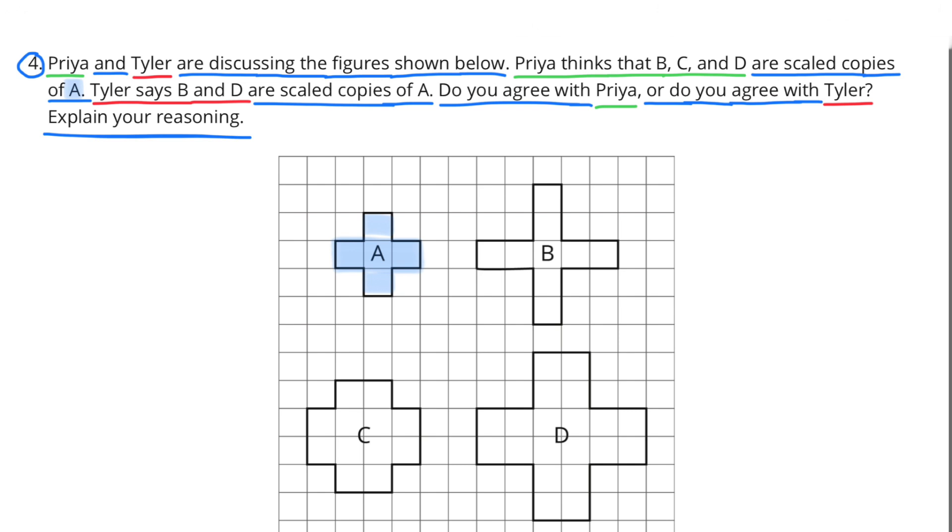Tyler says B and D are scaled copies of A. Do you agree with Priya or do you agree with Tyler? Explain your reasoning.